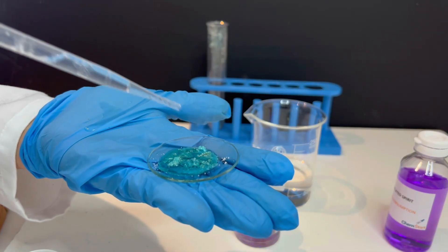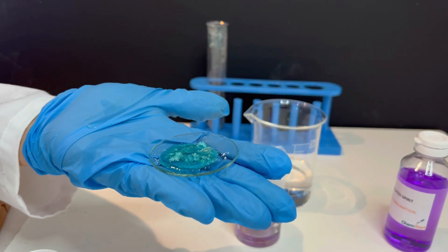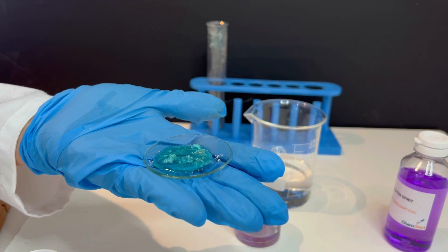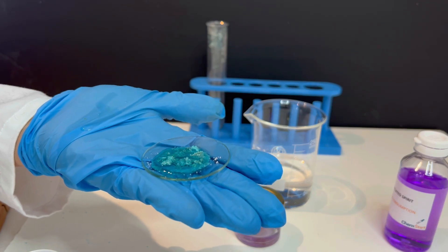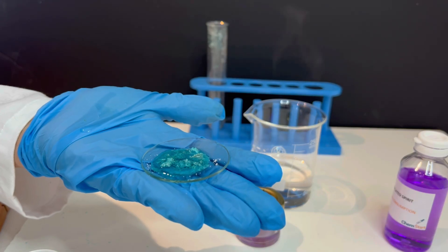So this simple experiment shows us how heating copper sulphate removes the water of crystallisation and turns it white. Adding water back restores the blue colour, showing that the process is reversible.